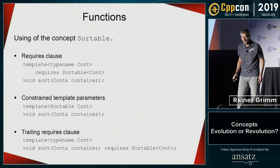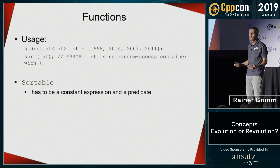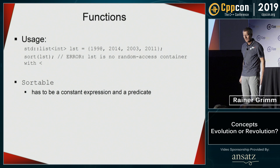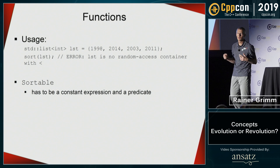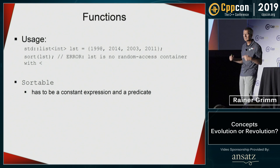When you invoke sort with something that doesn't support a random access iterator — such as std::list — you get a nice error message instead of an ugly one. std::sort requires the container to have random access iterators on which you can apply the index operator. But std::list only supports a bidirectional iterator. Before concepts, this produced a very ugly error message.